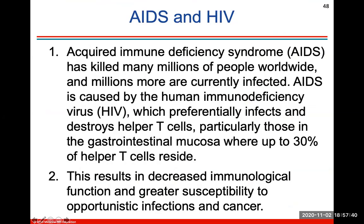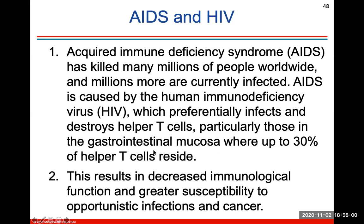AIDS is also known as acquired immune deficiency syndrome. It has killed many millions of people worldwide and millions more are currently infected. AIDS is caused by the human immunodeficiency virus, which preferentially infects and destroys helper T cells, particularly those in the GI mucosa, where up to 30% of your helper T cells reside. HIV basically results in decreased immunological function and greater susceptibility to opportunistic infections and cancer, by destroying these helper T cells.